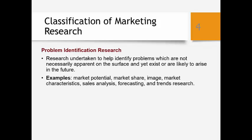In the next several slides, we'll try to classify marketing research. There are two types of marketing research: problem identification research and problem solving research. Problem identification research is the research undertaken to help identify problems which are not necessarily apparent on the surface and yet exist or are likely to arise in the future. Examples include market potential, market share, image, market characteristics, sales analysis, forecasting, and trends research. This type of research is helpful in the early stage and often serves as a reference point for problem solving research.